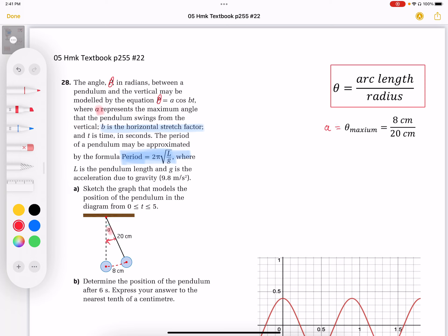So in this particular situation, our arc length is 8 centimeters. Our radius is 20 centimeters. So when we divide the two, this is going to be the starting position, which then represents the maximum angle A. So the A value is going to be 0.4 in our equation.